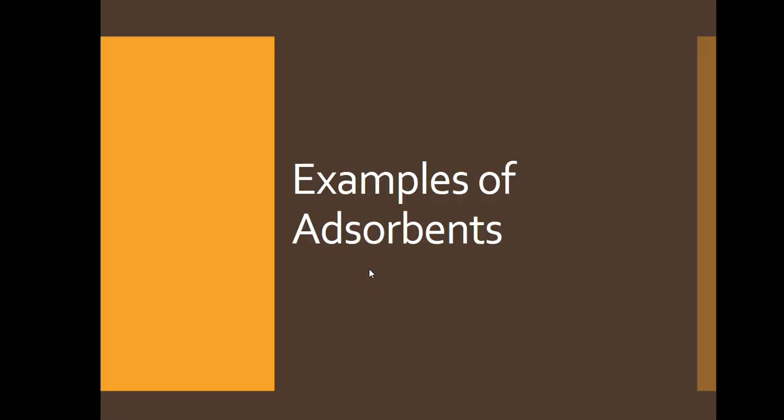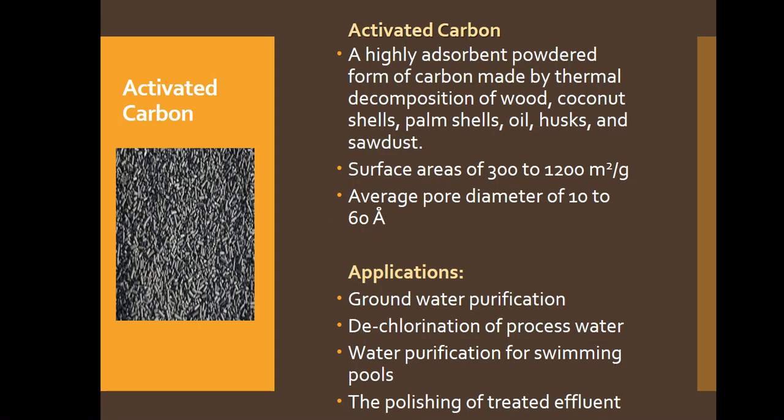On top of the list of adsorbent examples is activated carbon. It's highly adsorbent and is a form of carbon made from thermal decomposition of wood, coconut shells, palm shells, oil husks, and even sawdust. Its surface area ranges from 300 to 1,200 square meters per gram with an average pore diameter of 10 to 60 angstroms. Applications include groundwater purification, dechlorination of processed water, water purification for swimming pools, and polishing of treated effluents.